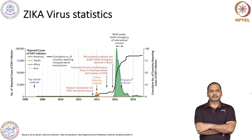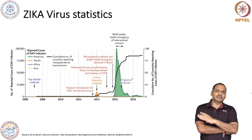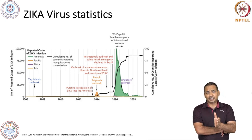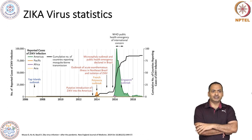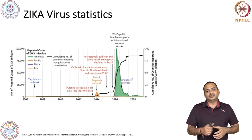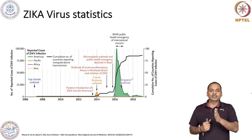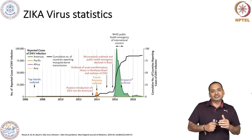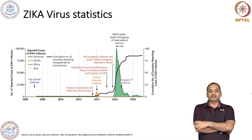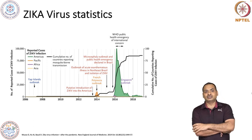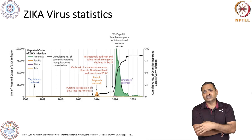Looking at Zika virus statistics, in early years this was not causing major epidemics, but in recent years there has been an increase. In 2014 there was a French Polynesia outbreak, and there have been several outbreaks since. The number of cases in recent years has increased, and although from 2017 to 2019 there was a slight plateau, there is a tendency to increase. The number of Zika cases are increasing and this is a point of concern.